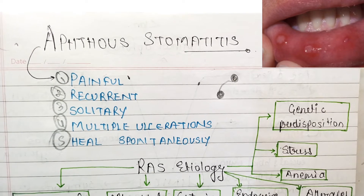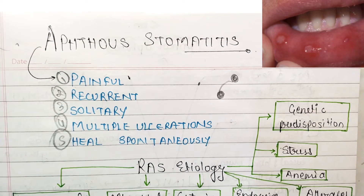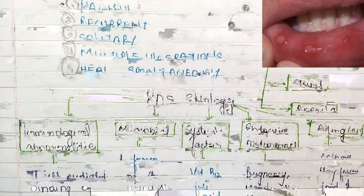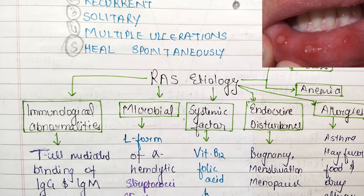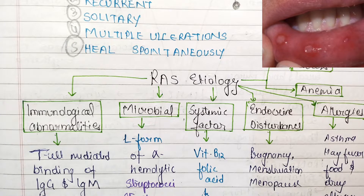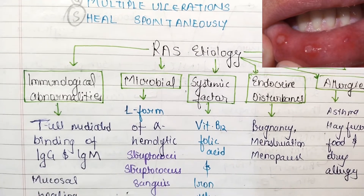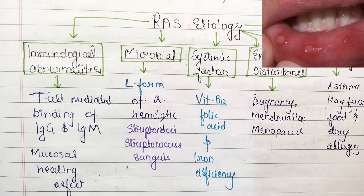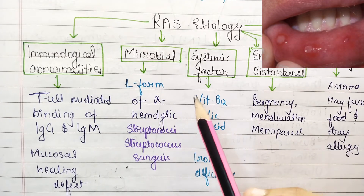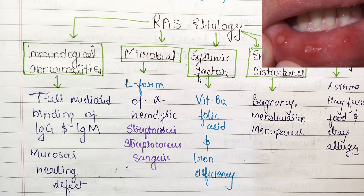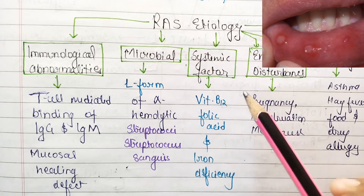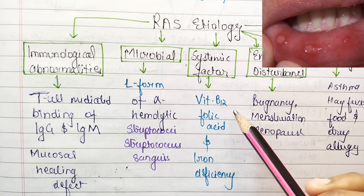Looking at the etiology, there are mainly eight types. First is immunological abnormalities — that means T-cell mediated binding of IgG and IgM is affected and there is a mucosal healing defect. Second is microbial, involving alpha-hemolytic Streptococcus.